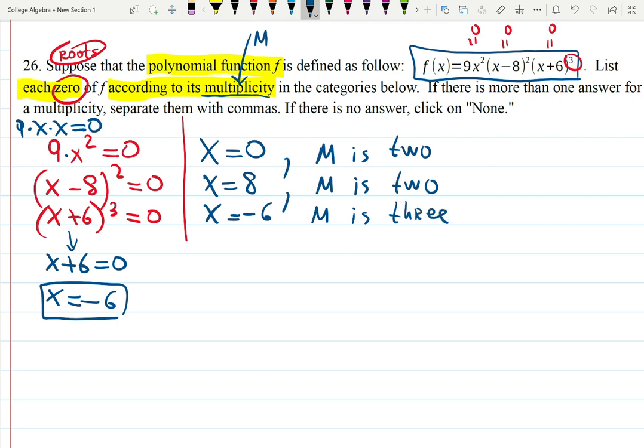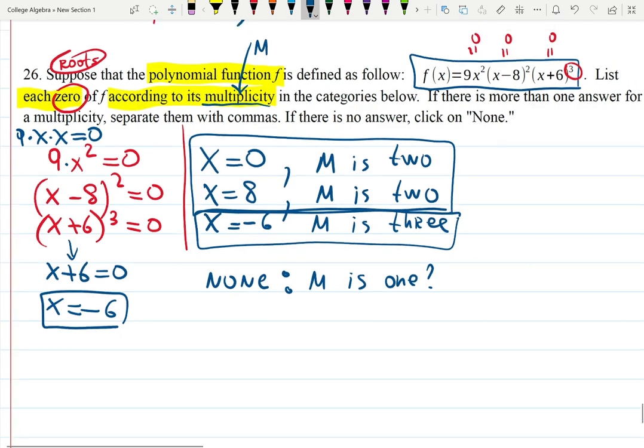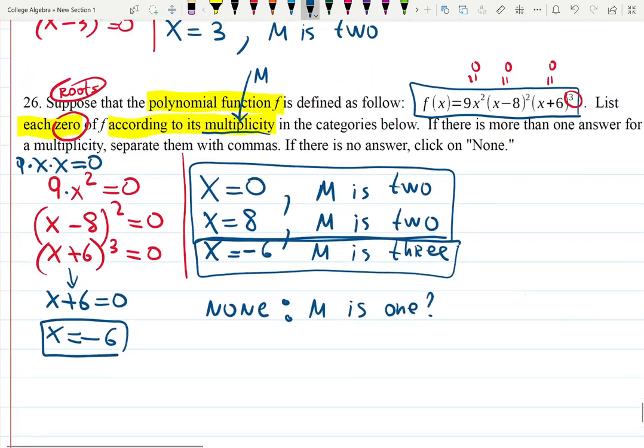Is there any root that has multiplicity 1? None. Just in case for you to understand, there's no roots here that have multiplicity 1. It has three roots, but all of them have different multiplicities: 0 and 8 have multiplicity 2, -6 has multiplicity 3, and there's no roots with multiplicity of 1.